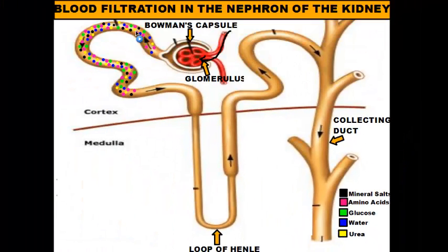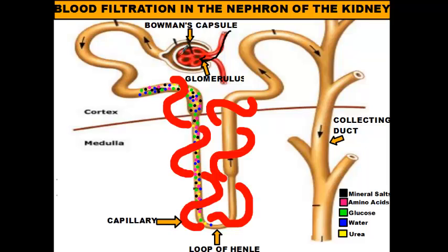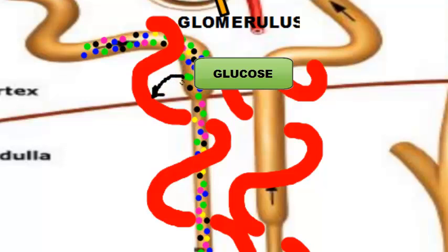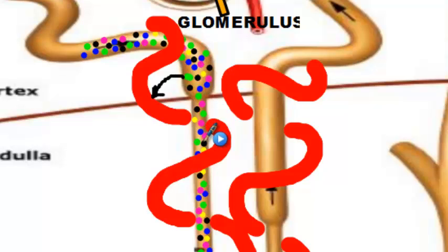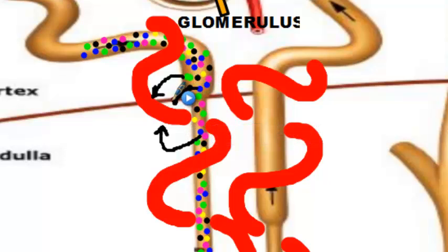This solution, called the filtrate, moves through the nephron and enters the loop of Henle, where filtration takes place — where we start picking and choosing things we need and things we don't. Around the loop of Henle is a web of capillaries. What happens is the reabsorption of glucose back into the blood, because you need glucose to make energy. Second, amino acids get reabsorbed because your body needs them to produce proteins. And then water is also reabsorbed.